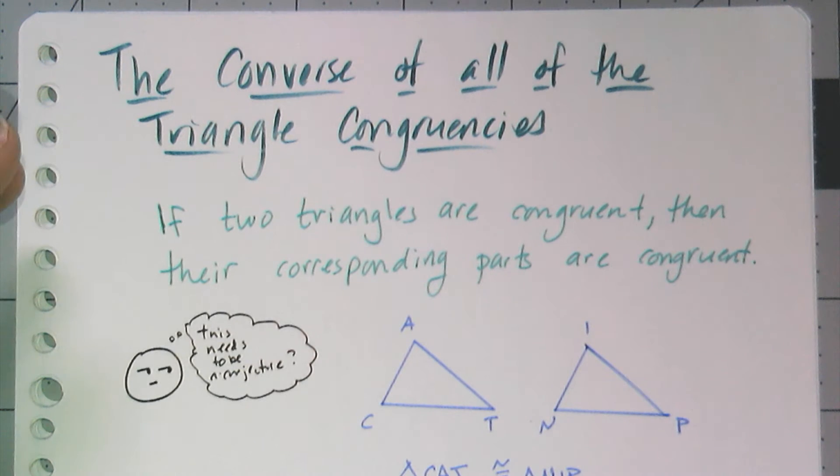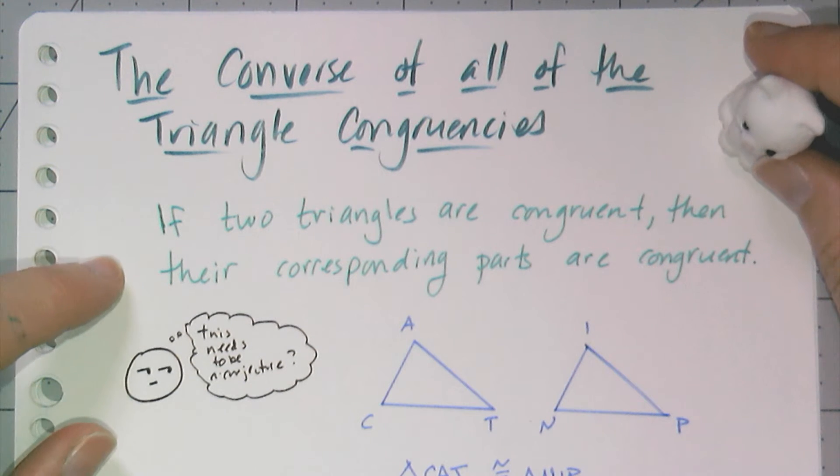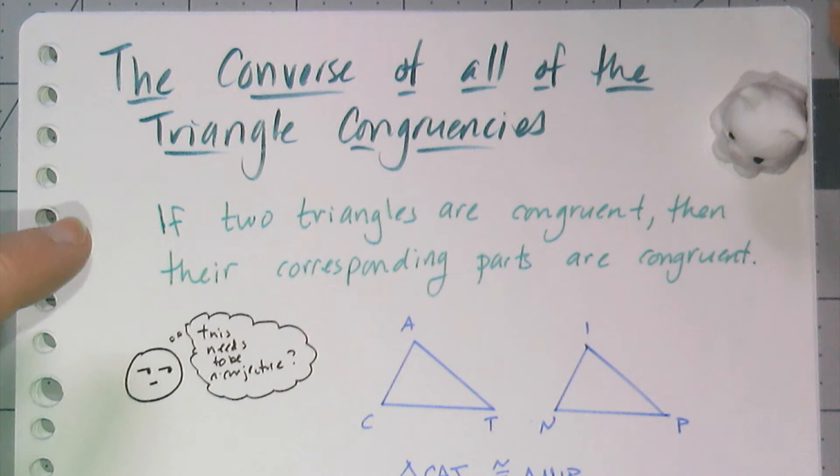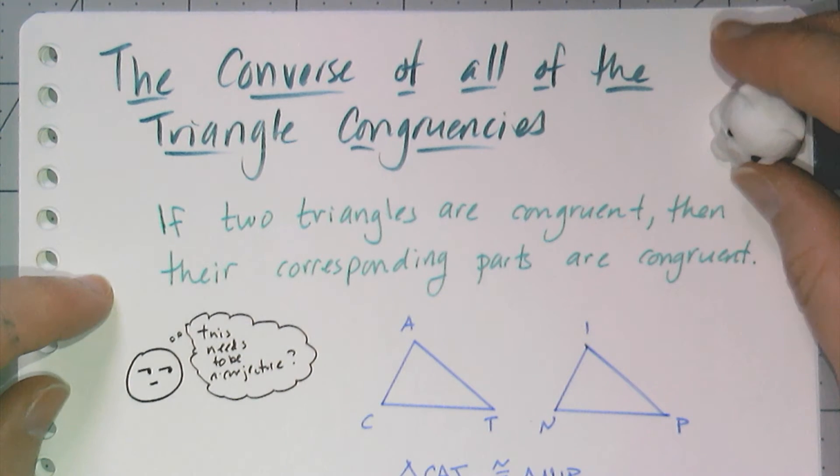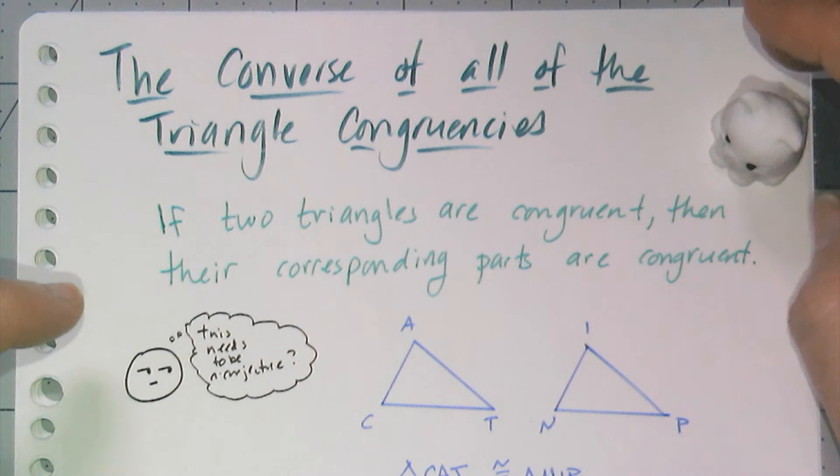Hey y'all, in this video we're going to look at the converses of all those triangle congruency conjectures, and there's just one of them. If two triangles are congruent, then their corresponding parts are congruent, and that should seem obvious to you because of the definition of congruent figures—their corresponding parts have to be congruent.